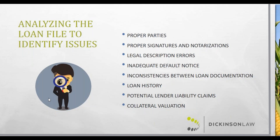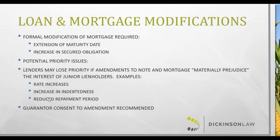Moving on to loan and mortgage modifications: the first request from stressed agricultural borrowers is often for a simple modification, which gives them more favorable repayment terms. This can be an effective tool when dealing with highly variable commodity prices, giving the lender a chance to get repaid in full — assuming the borrower can regain their financial footing, which is often a big if.